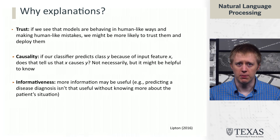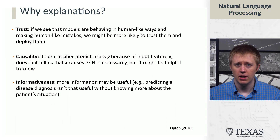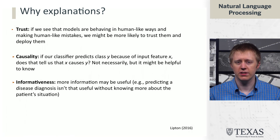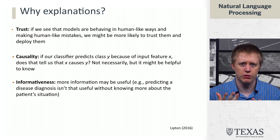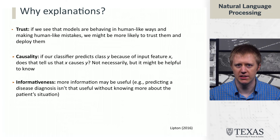Informativeness is a third thing we might want. Rather than just returning a prediction, the model should also give some other information that might be useful. For example, in medical diagnosis contexts, if you see something like an MRI, you don't just want to know the neural network thinks it's glioblastoma. You want to know more information because as a doctor, you need to figure out a follow-up course of treatment — a coarse label doesn't actually help. Being able to provide more information makes the classifier strictly more useful in addition to building trust and giving us an idea of what's going on.